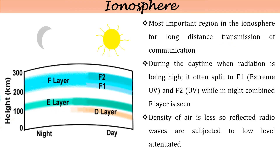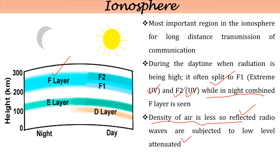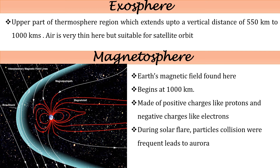The E layer is composed of soft X-rays. The most important region in the ionosphere for long-distance communication is the F layer. During daytime, the F layer splits into F1 and F2 — F1 consists of extreme UV rays while F2 contains only UV. At night, the two layers combine back into a single F layer. The density of air is very low, so it reflects radio waves subjected to low levels of attenuation — attenuation being the loss of signal as it moves from one place to another.